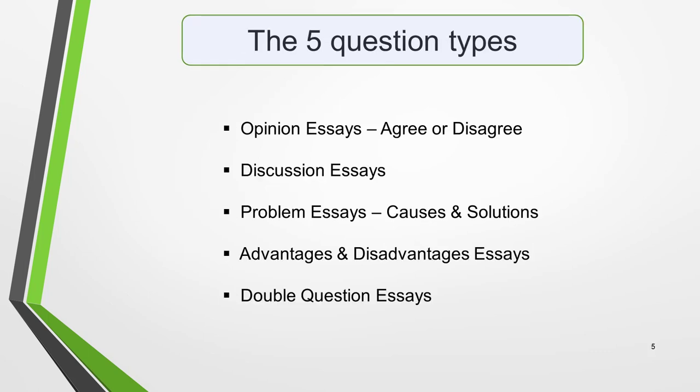There are five different types of Task 2 essays that you could be asked to write: Opinion essays, also known as Agree or Disagree; Discussion essays; Problem essays, which include Causes and Solutions; Advantages and Disadvantages essays; and Double Question essays.